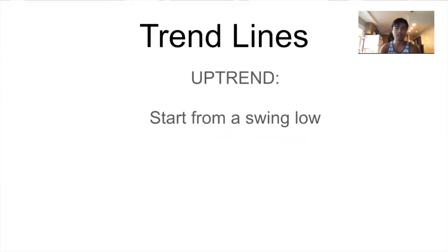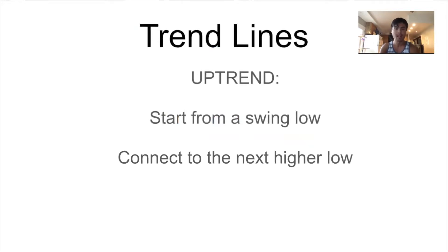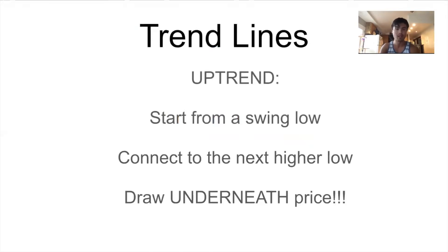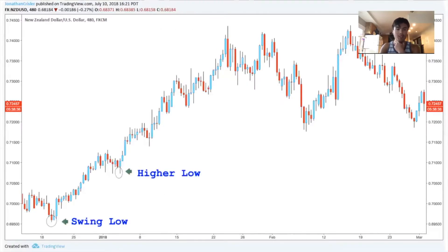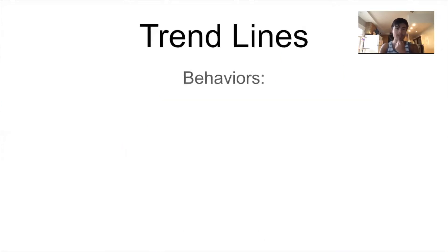Now let's go over how to draw one for an uptrend — it's the exact same thing except for an uptrend instead of a downtrend. We're going to start from a swing low, connect to the next higher low, and draw it underneath price. Here we have a swing low and the higher low, and all we do is connect those lows with a line, and now we have a valid trend line. Trend lines have behaviors, and it's really important to know these so you know how to make predictions based off trend lines.